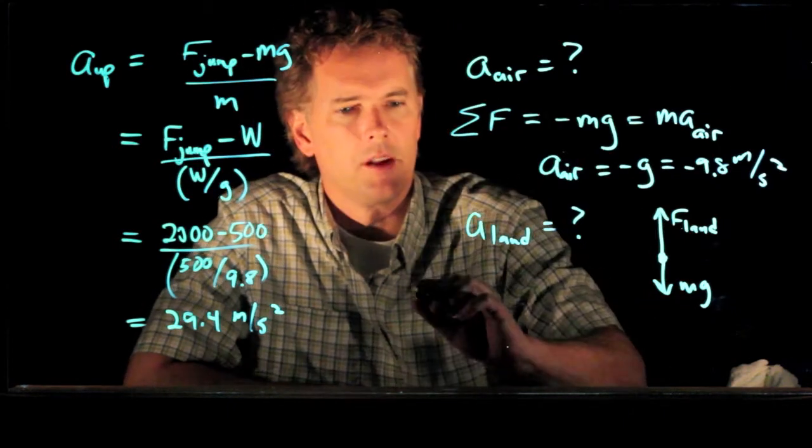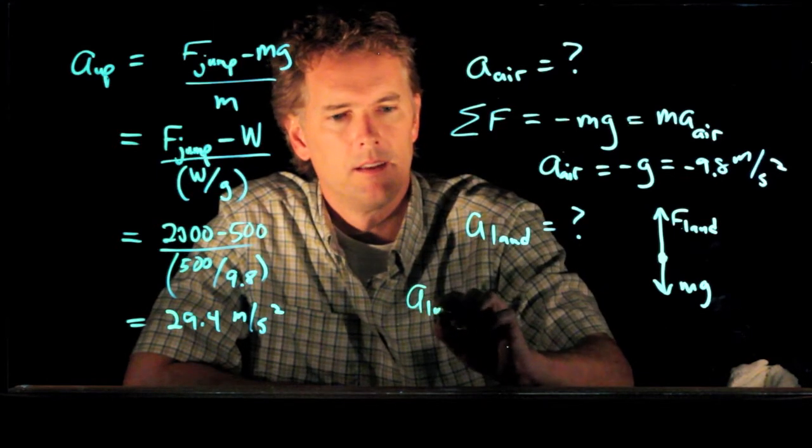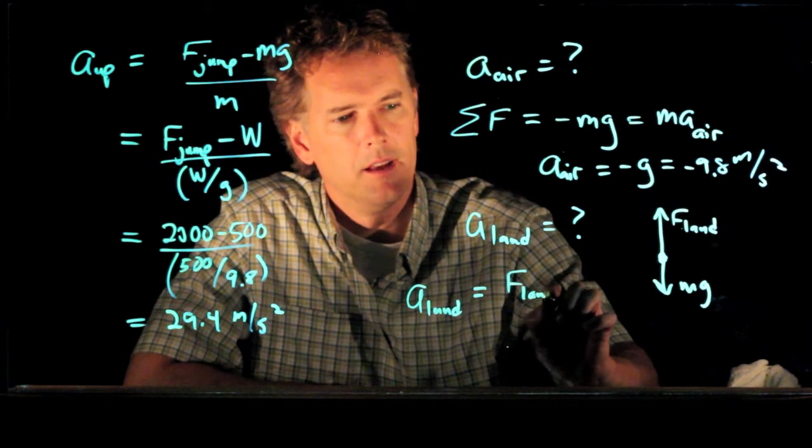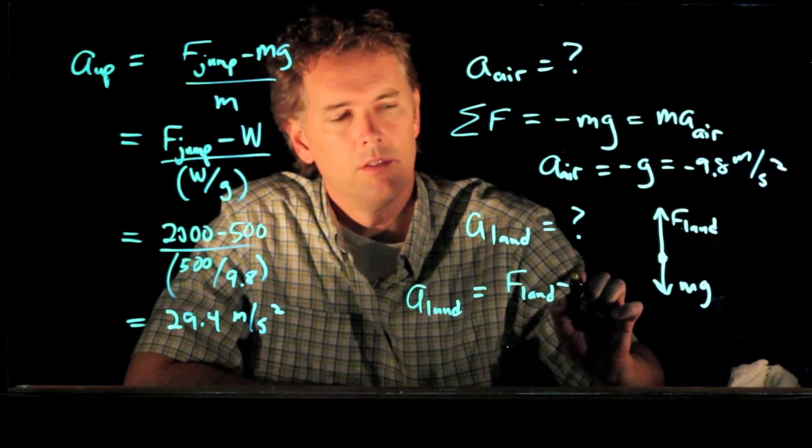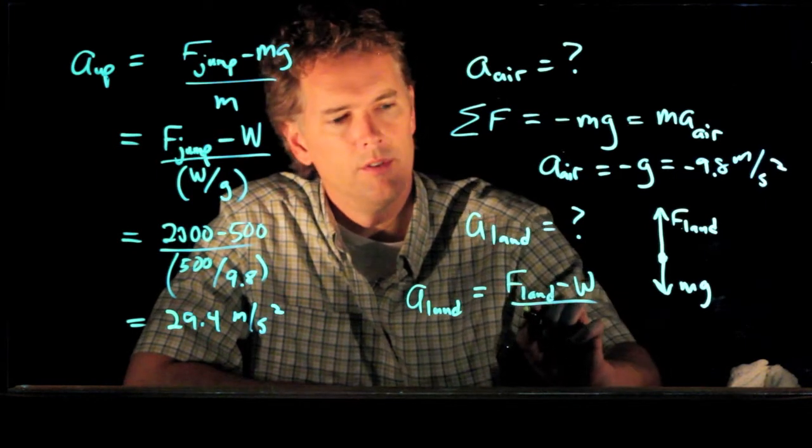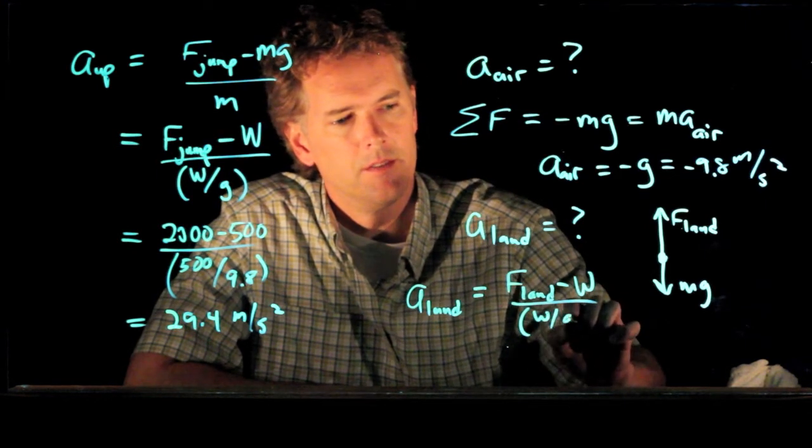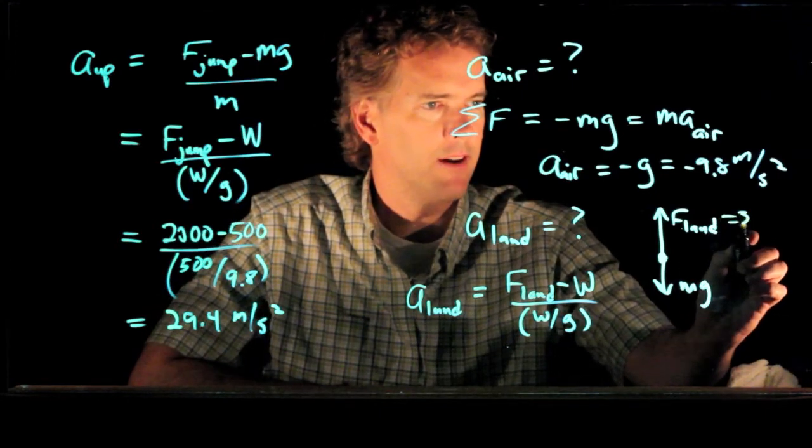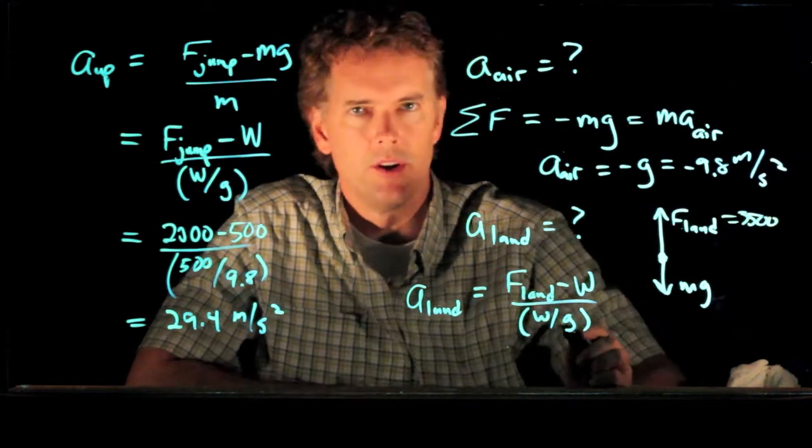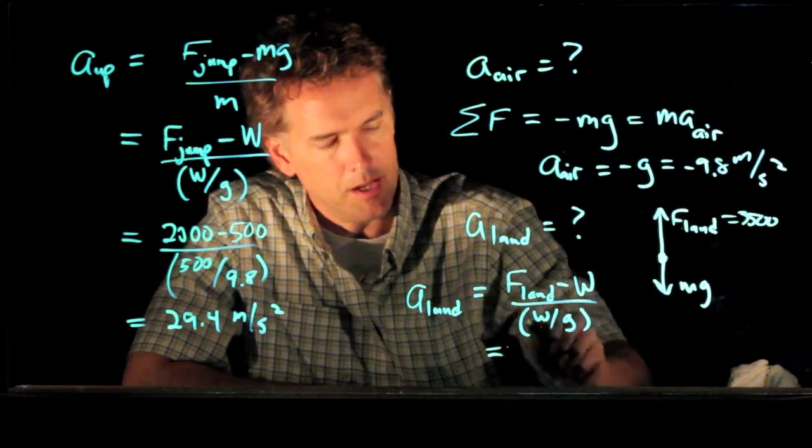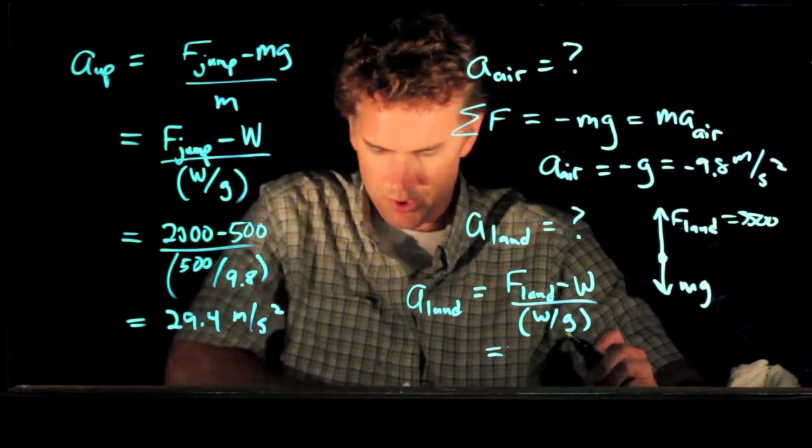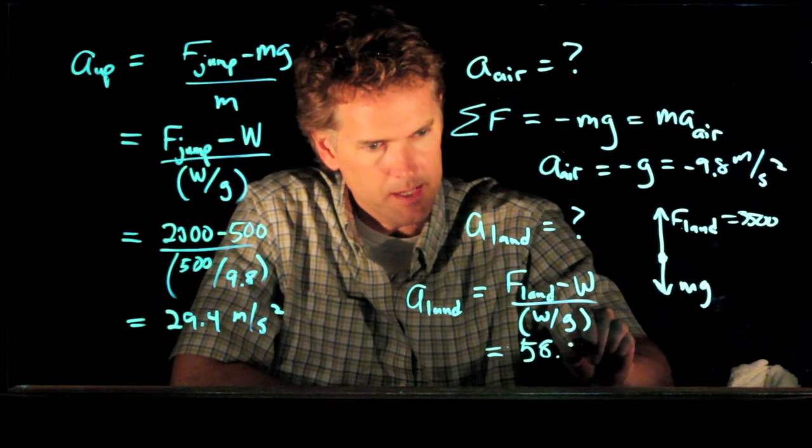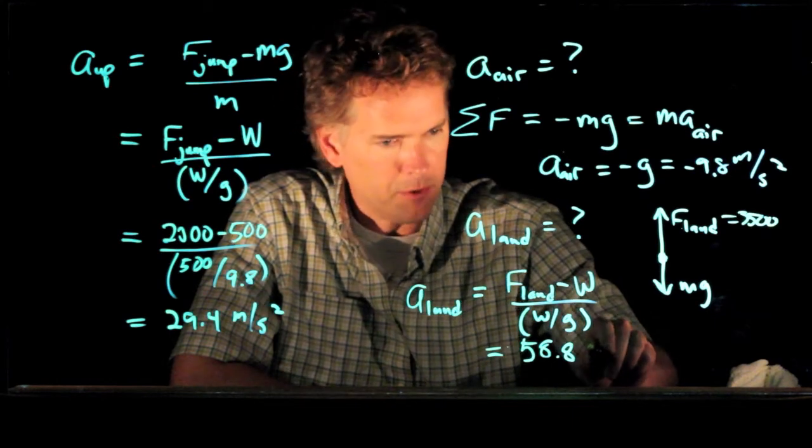And so in fact we can use the exact same equation. So let's say A land is equal to the force during landing minus weight all over W over G. And we have all those numbers from the graph. F land was 3,500 newtons. And so you can plug in those numbers. And if you plug in those numbers, you should get 58.8 meters per second squared.